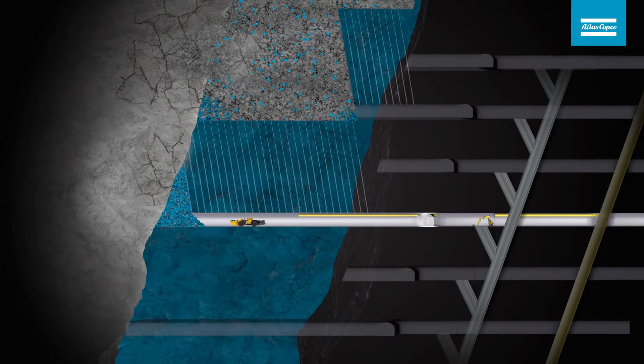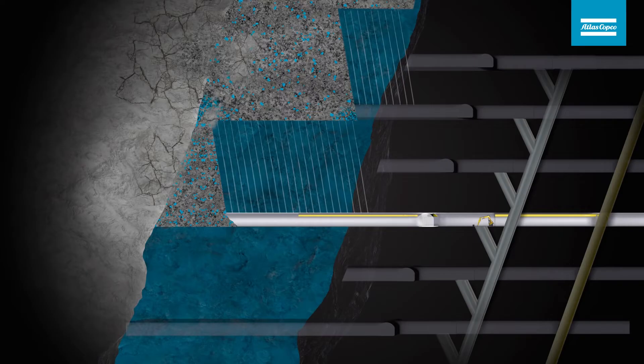Rock is loaded from the cave front after each blasted ring. In order to control dilution of waste rock in the cave, loading a predetermined extraction percentage of rock is done.